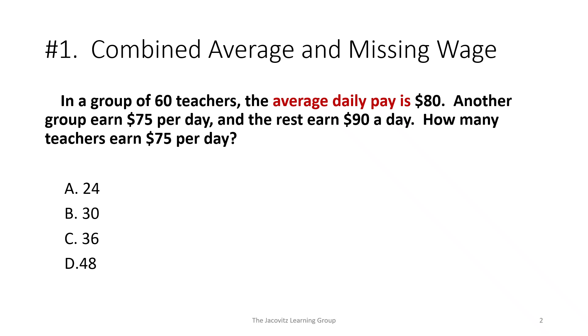We could set up 60 teachers with an average and start doing x equals 80 average, y equals 75, z equals 90. But we don't want to do that because that would be a weighted average where we knew what the weights were, but we don't know what's what. We don't do something like this. We actually get a formula.